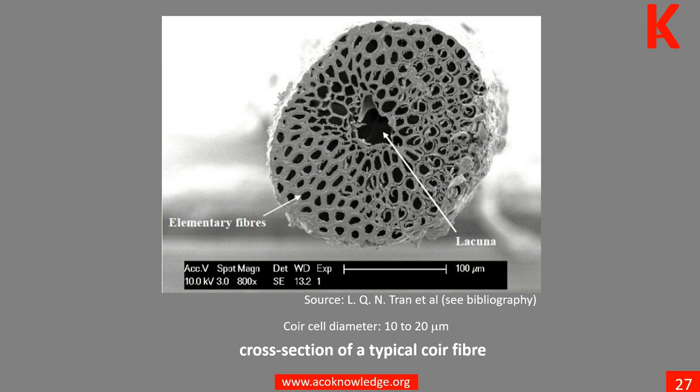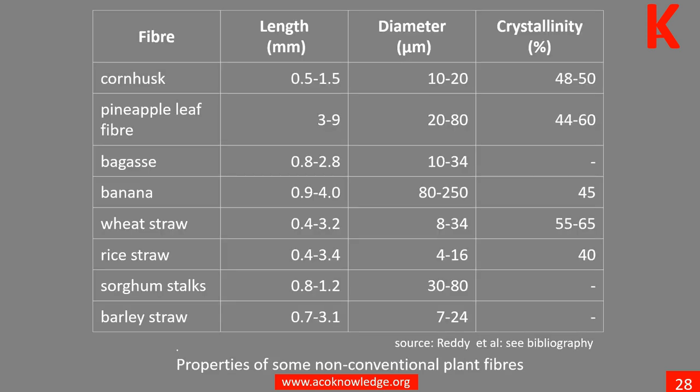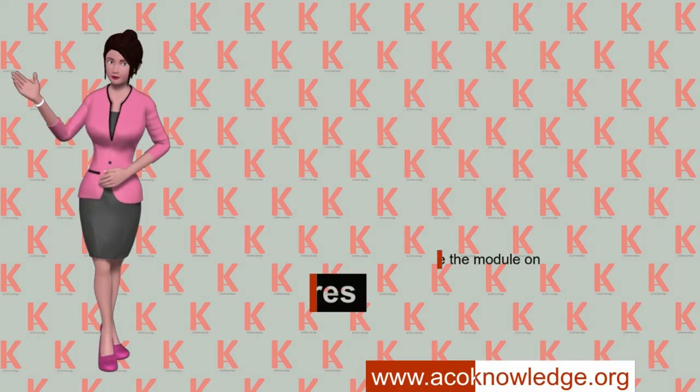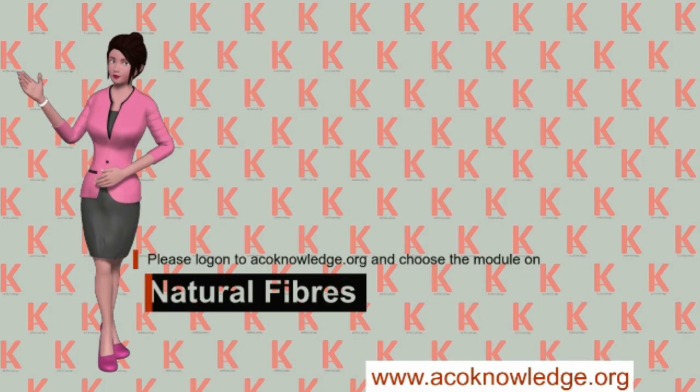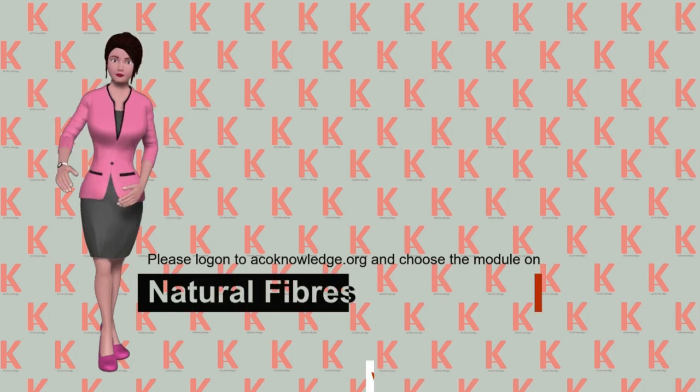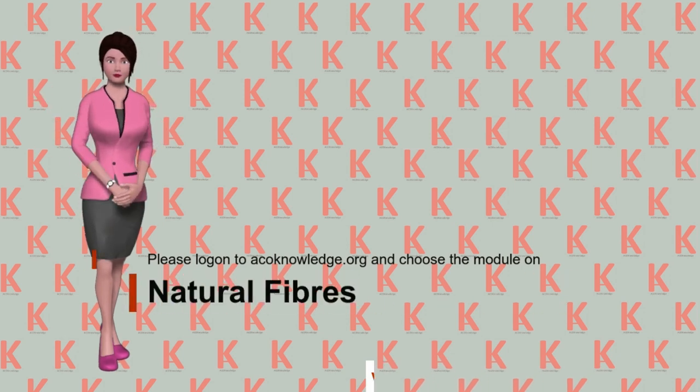This table shows typical values of some mechanical properties and density of sisal fibers. The core cell, or elementary fiber, is about 10 to 20 microns in diameter. Learn more in Unit 12. The table also shows characteristics of less conventional plant fibers. Learn more in Unit 12.